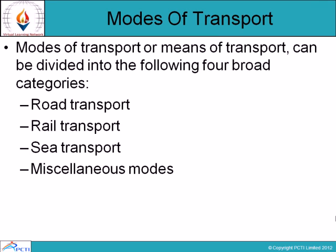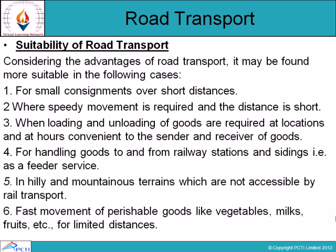There are four modes of transport: road transport, rail transport, sea transport, and miscellaneous modes. Road transport is more suitable for small consignments over short distances, when speedy movement is needed, and where repeated loading and unloading is not required. Road transport is also useful in hilly or mountainous areas where rail transport cannot reach. However, road transport has limitations: services may be delayed if vehicles break down, there is no uniformity in rates among different agencies, and small operators have no fixed time schedule.